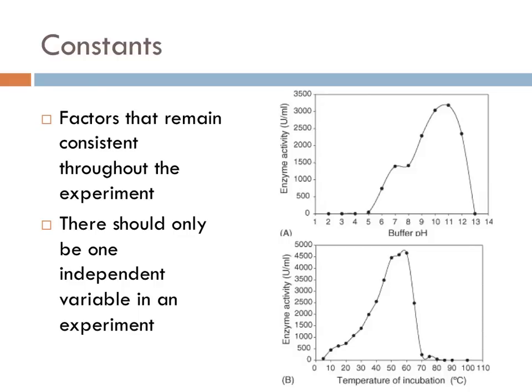In a given experiment, there should be one independent variable, as mentioned earlier. As many other variables as possible should remain constant or the same. If more than one factor is varied in an experiment — whether intentionally or unintentionally — the cause of some change might be left to question. In the graphic to the right, an experimenter is manipulating two different variables: the pH, or the acidity or basicity of a substance, and the temperature of a solution, and looking at how fast an enzyme works. As the graphs illustrate, both of those variables play a large role in how quickly the enzyme works. If both variables were modified at the same time, the results may not accurately depict the relationship between the independent and dependent variables. So maintaining lots of constants is important.